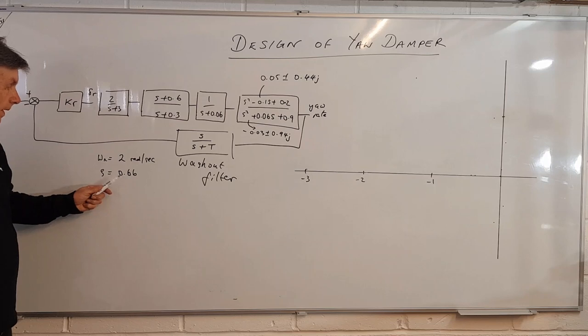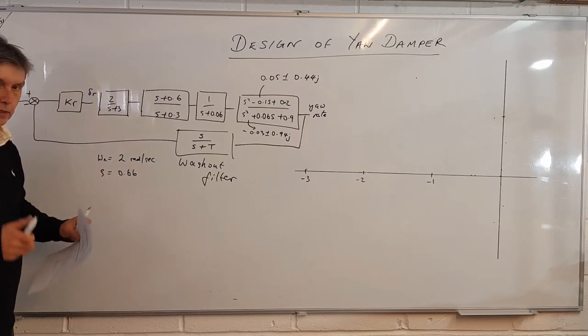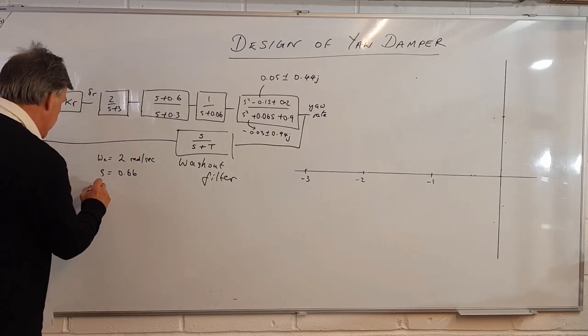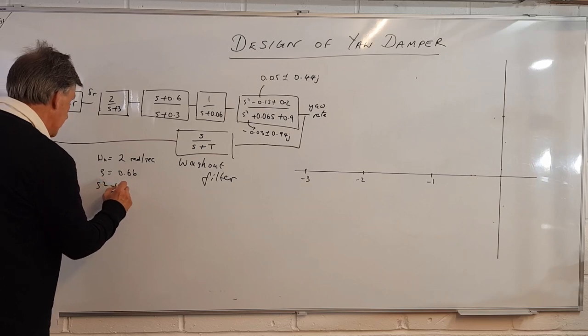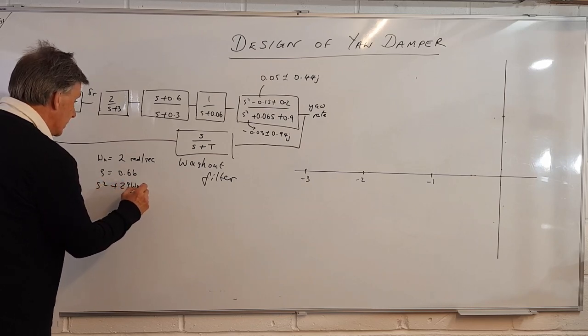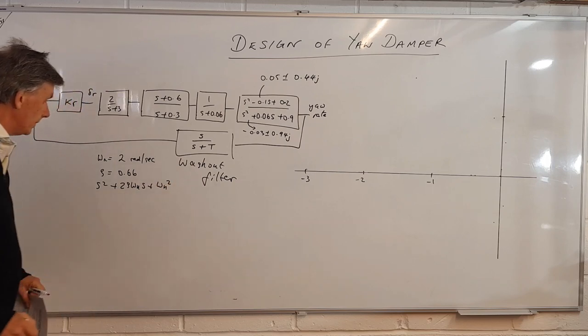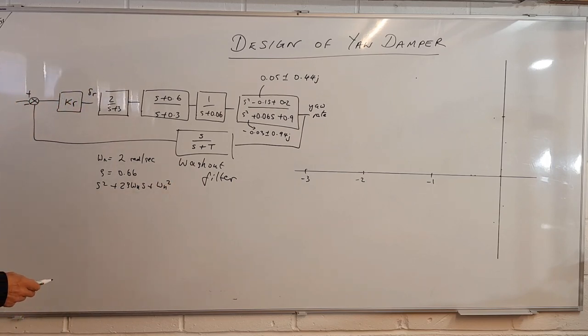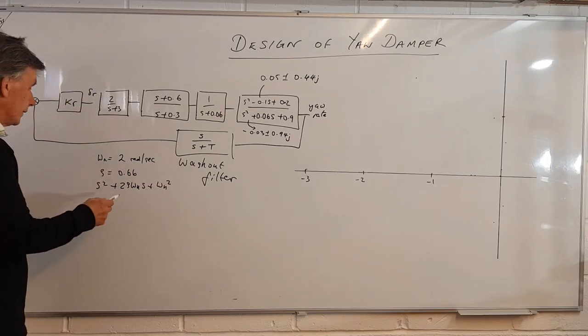So these numbers now have to be put into our standard second order system equation s squared plus 2 zeta omega n s plus omega n squared. So we're now going to get 2 times 2 zeta of 4.